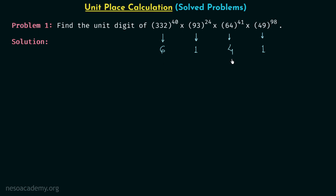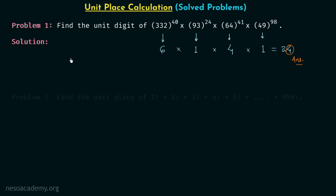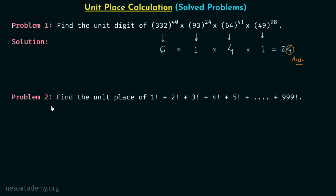The next step is to multiply all the obtained unit digits: 6 × 1 × 4 × 1. 6 × 1 = 6, 6 × 4 = 24, 24 × 1 = 24. In the number 24, the digit 4 is at the unit place, so 4 is our answer. This multiplication will have 4 as the unit digit. We are done with problem number one.